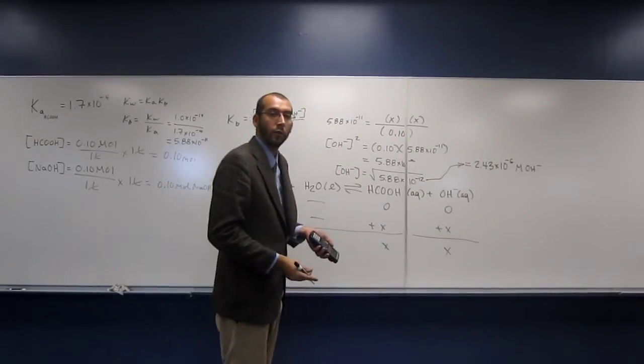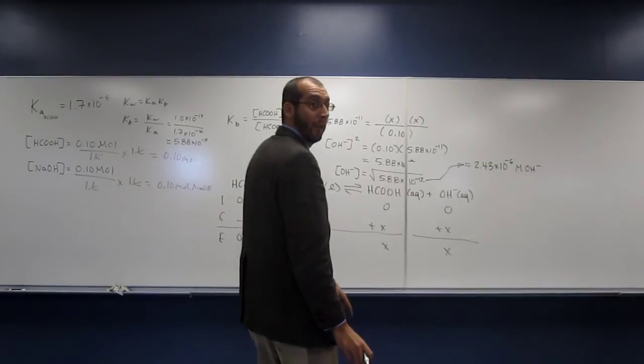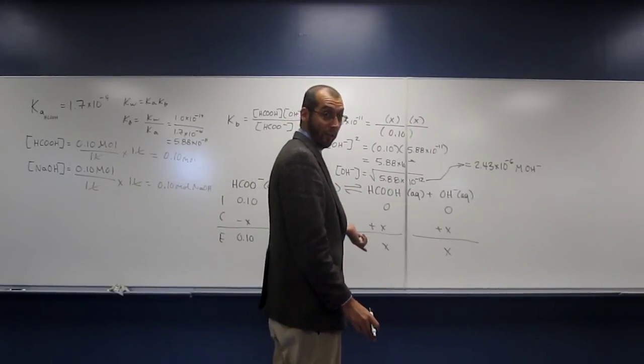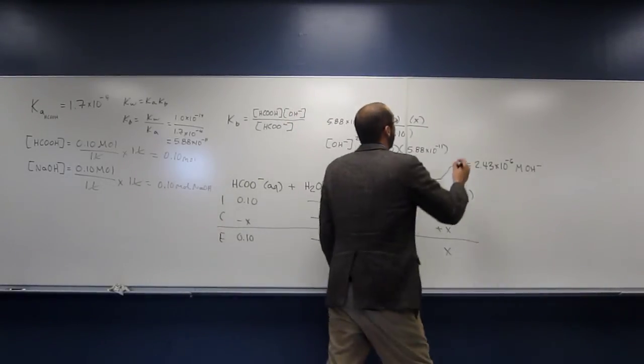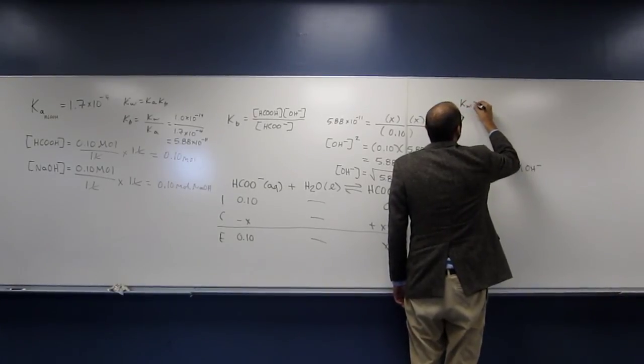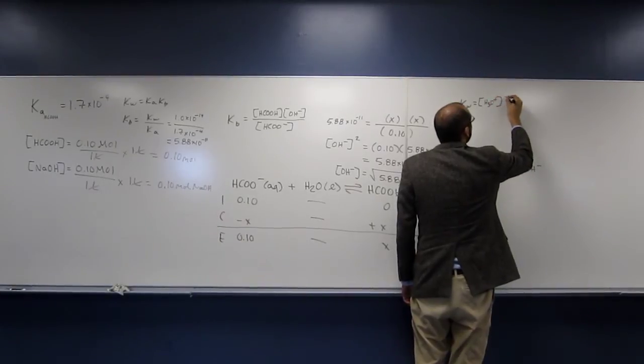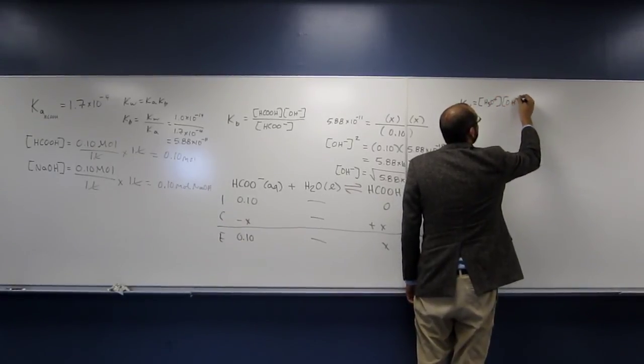But we're looking for pH, right? So we don't need OH minus, we need H3O plus, right? So how do I do that? Well, remember, KW also equals concentration of H3O plus times the concentration of OH minus, right?